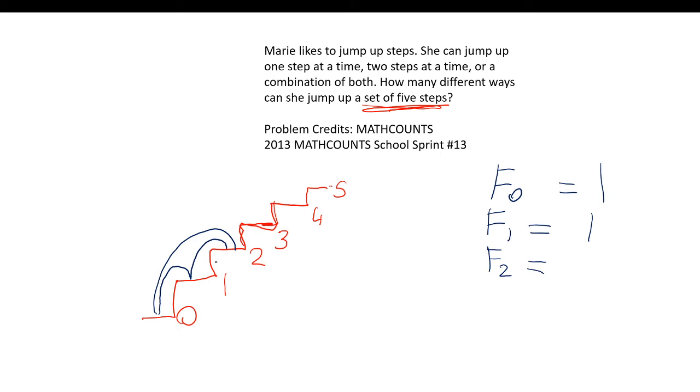So essentially, to get to F2, you can go one-one or just take a big two-step. So there are two ways to get to the second step. Now, we notice that two is the sum of F0 and F1. We're going to see if that pattern holds for F3.